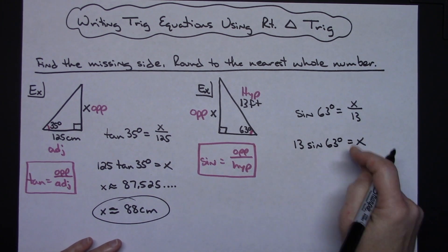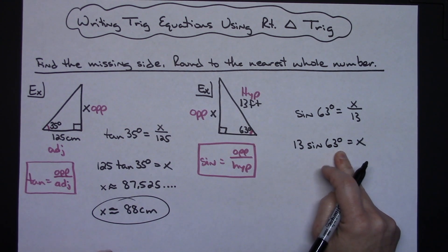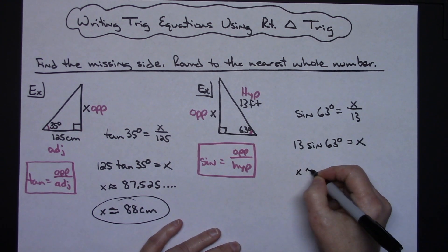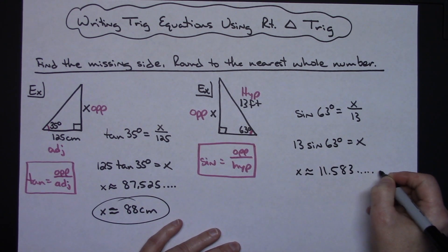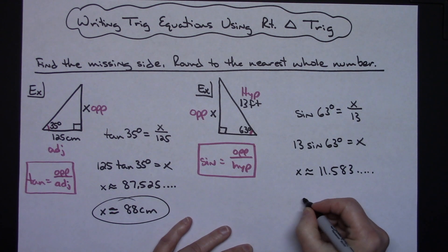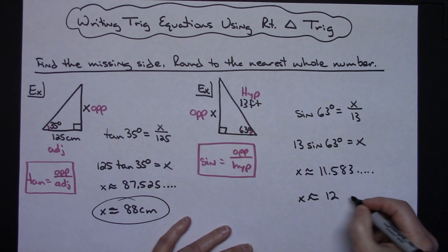At this point I'll grab the calculator. Making sure it's in degree mode, 13 times the sine of 63 gives me X approximately equal to 11.583, which continues on forever. Rounding to the nearest whole number, I get 12 feet.